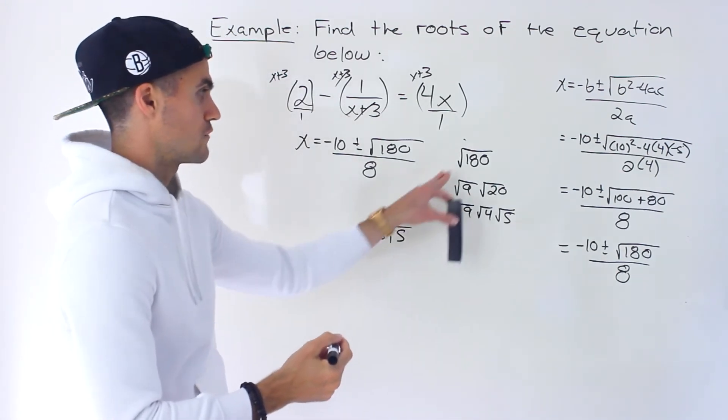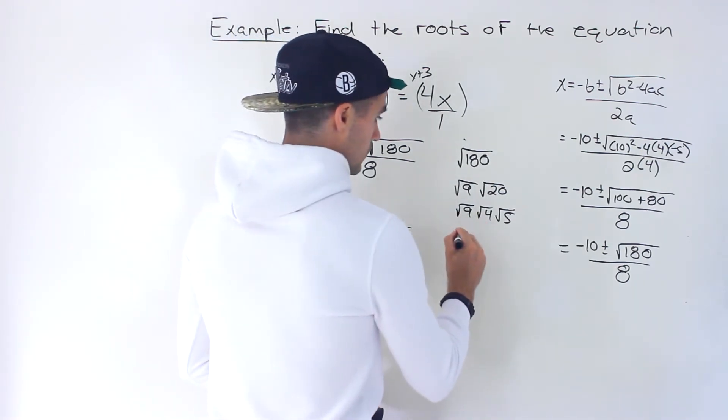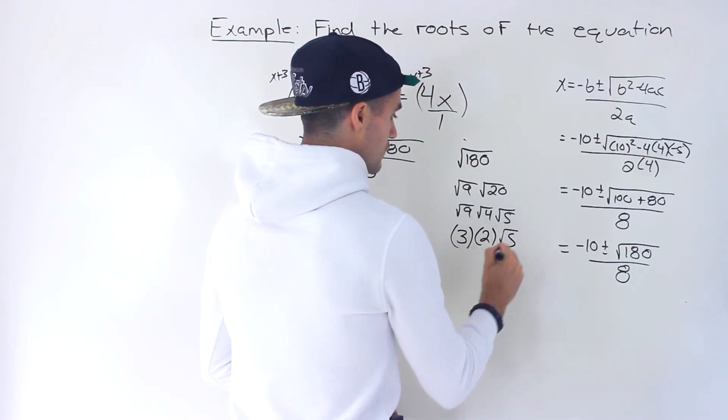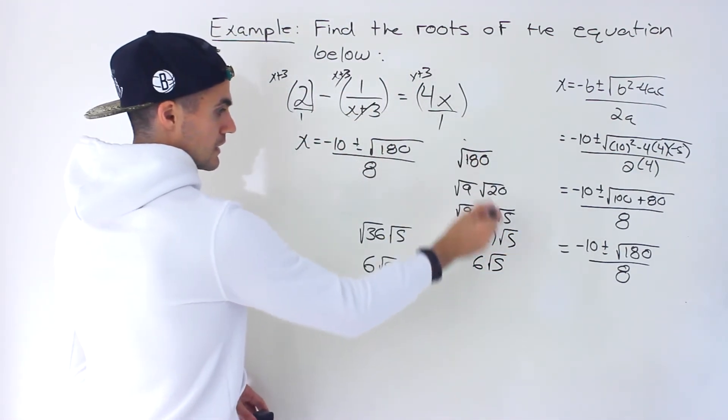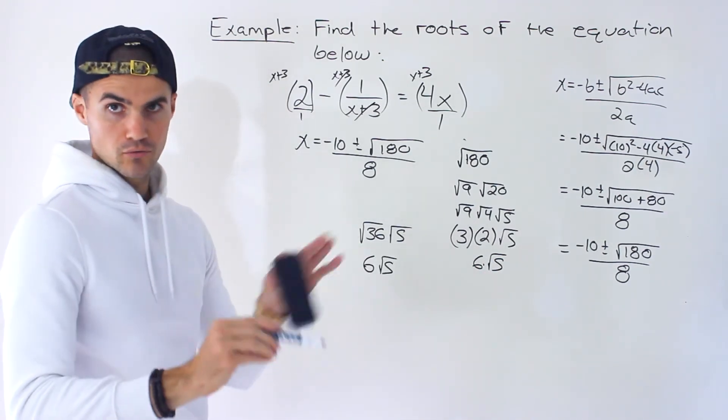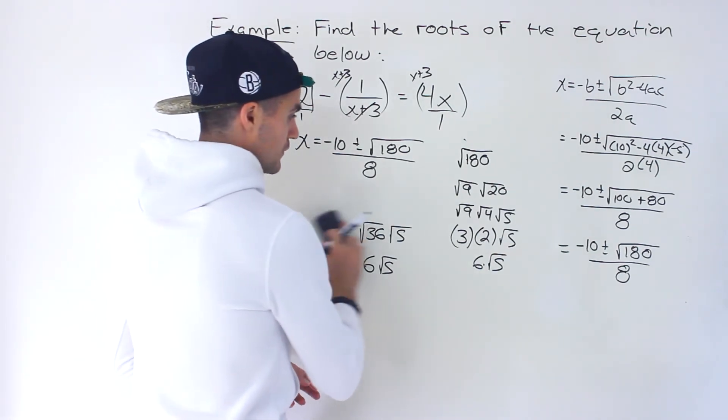36 times 5 would give us 180. This simplifies to 6 root 5. Versus here we'd have to do it in a couple of steps. We'll have 3, 2, root 5, 6 root 5. So root 180 is the same as 6 root 5 and then the root 5 doesn't divide by a rootable number. So we can't simplify that any further.